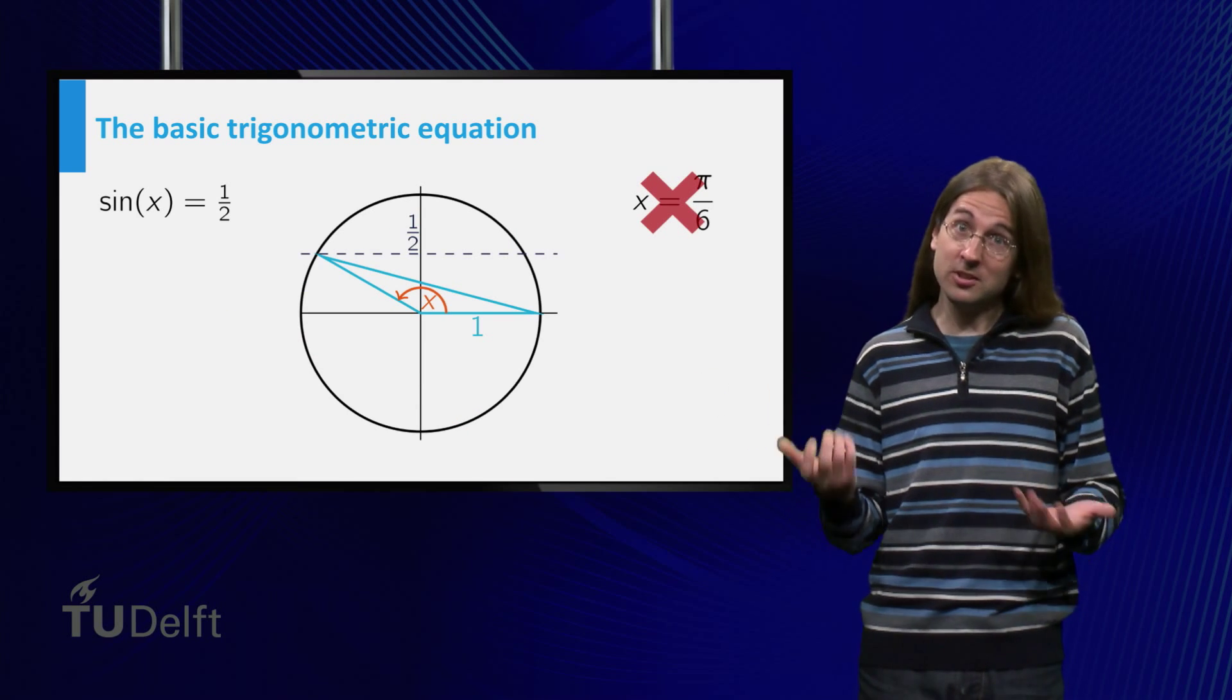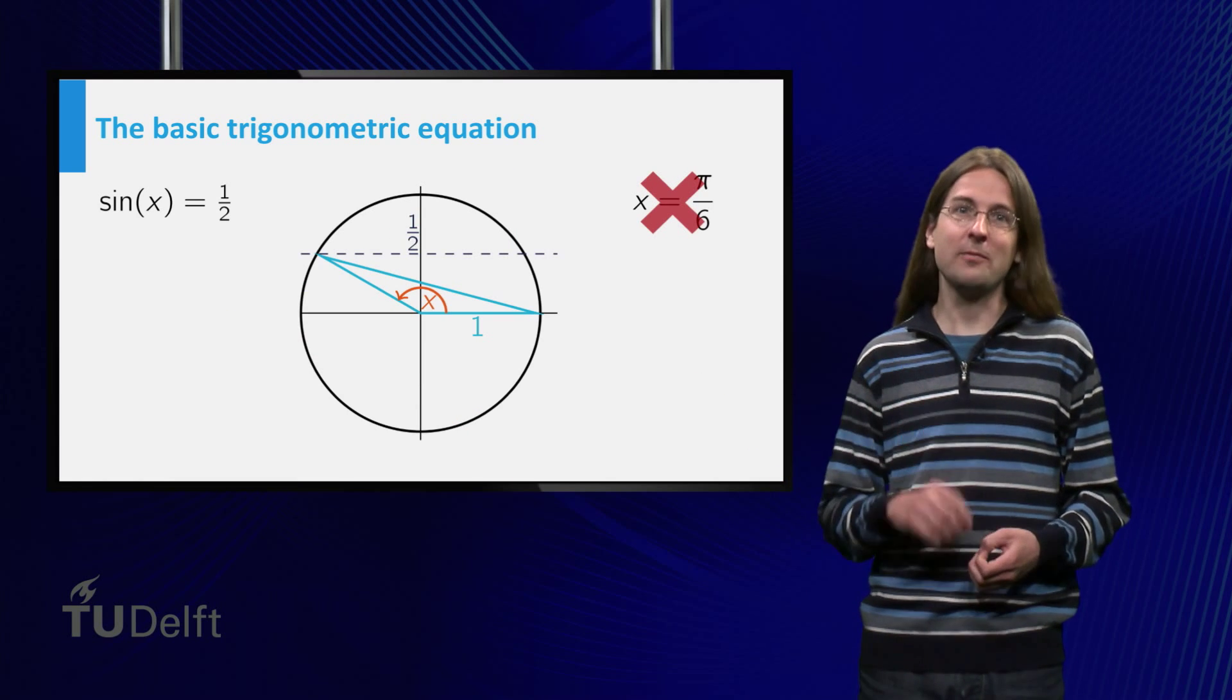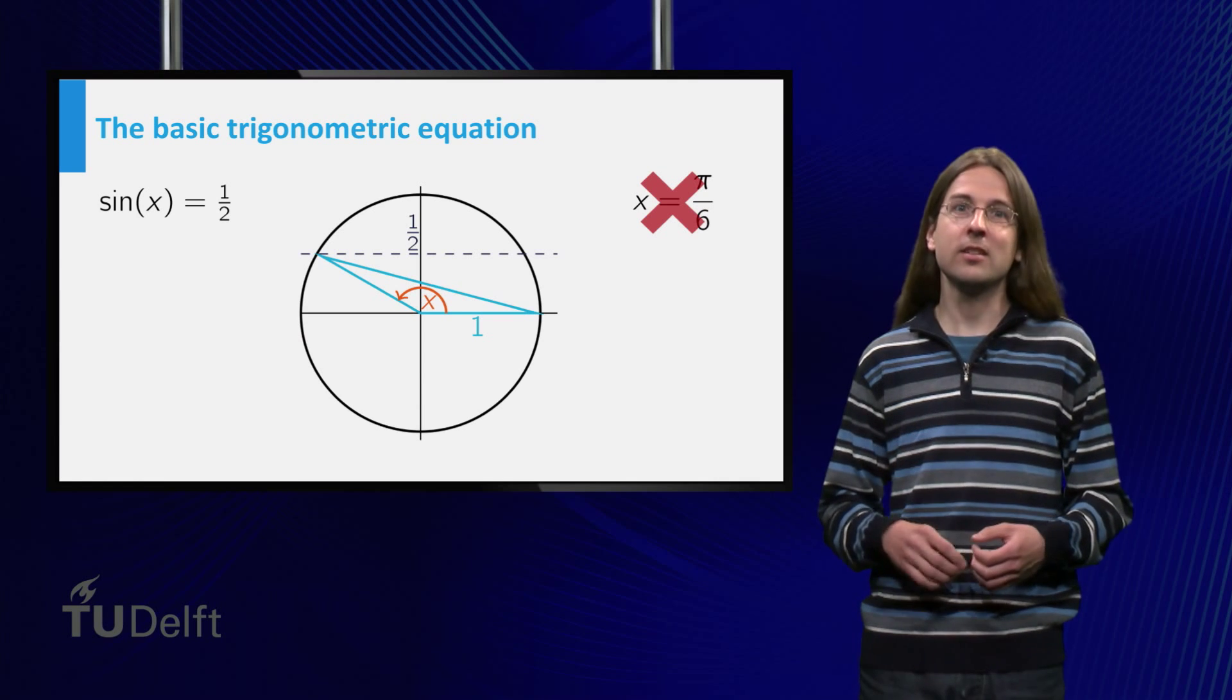Well, consider the triangle on the slide. That is not a 30 degree angle, but its sine is also equal to a half.